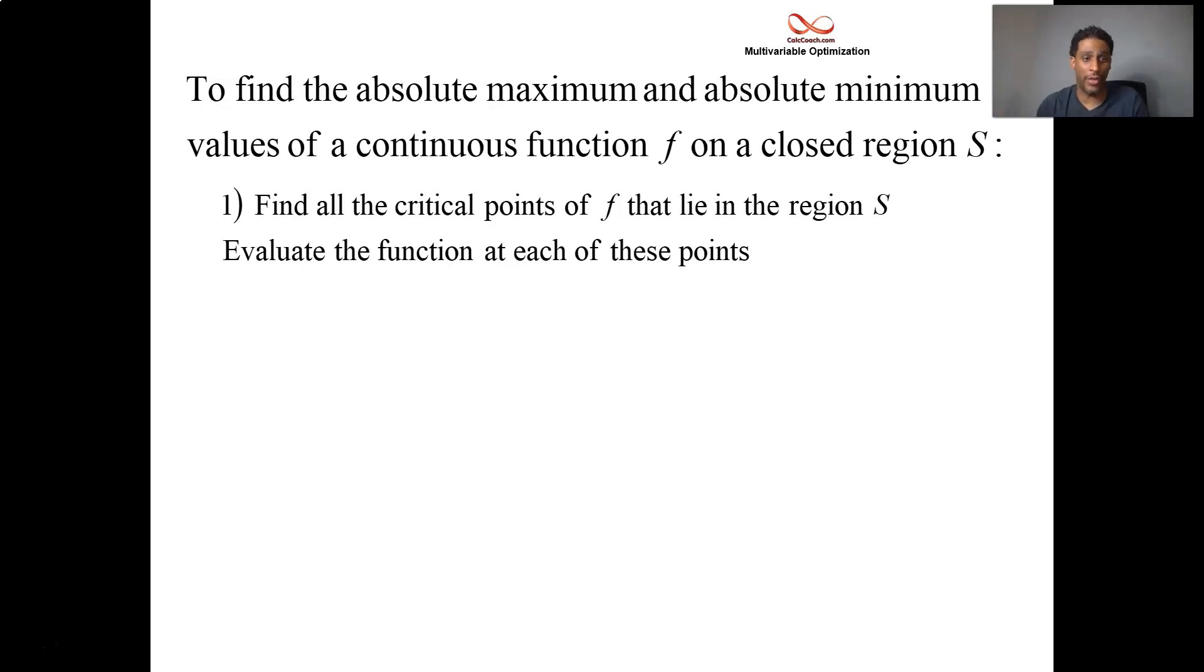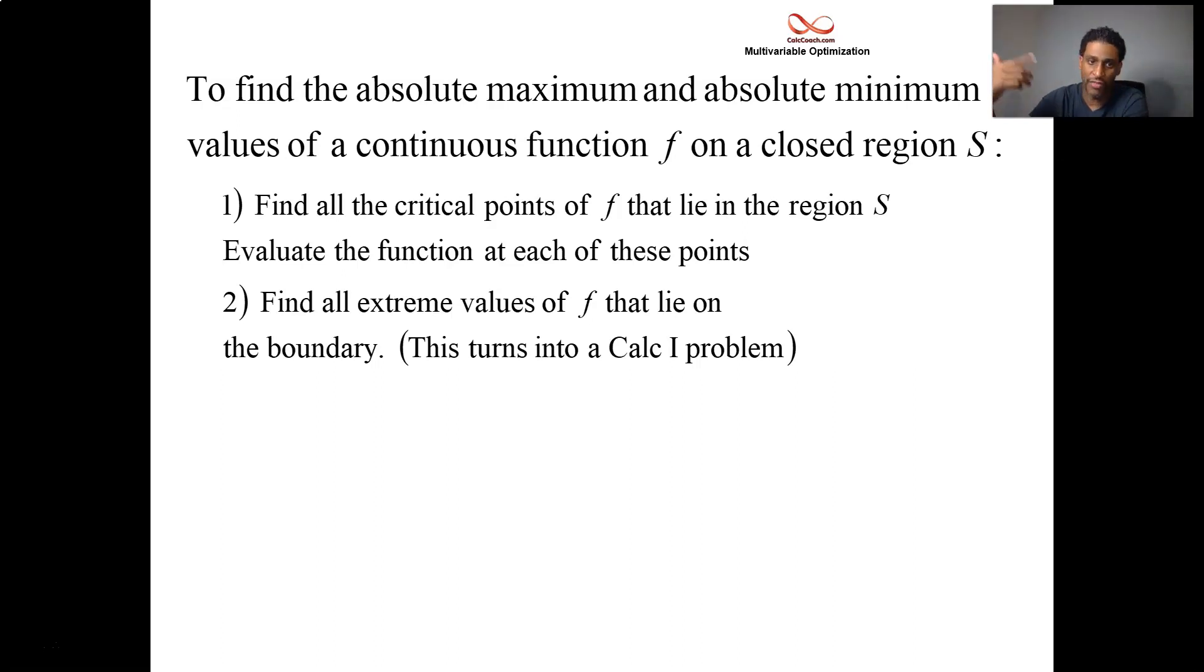Secondly, then, we need to look on the boundary, and that's what we did back in Calc 1. We looked at the endpoints. Well now, it's an entire series of endpoints on the boundary. Now what happens there, since we're going to stick to nice linear boundary lines to make the boundary, then what that does for you, it actually turns your function, then, at least over that line, it turns your function into a single variable function. And it's a Calc 1 question. You could solve it without trouble, hopefully.